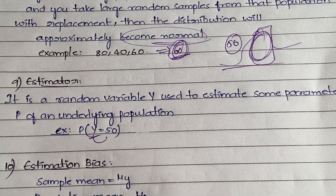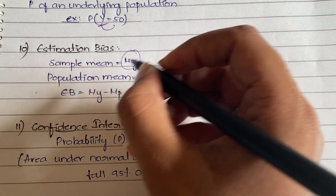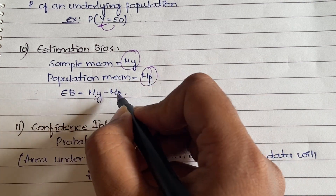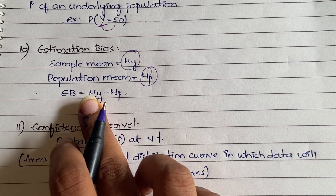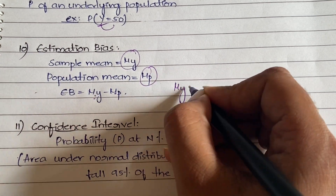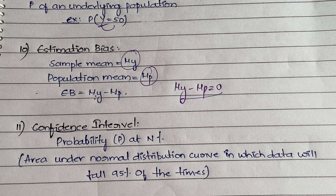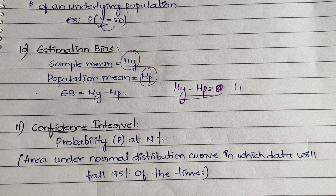The tenth definition is estimation bias. Suppose you have sample mean μy and population mean μp. Estimation bias = μy − μp. If μy − μp = 0, there is no difference between the sample mean and the population mean, so it is called unbiased data. But if there is some difference — getting 1, 2, or some value instead of 0 — then it is called biased data.